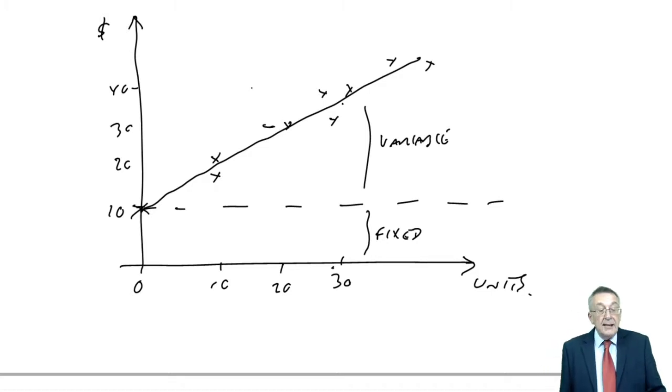But two things. One is, it's not completely variable. If it was completely variable, then since month two we spent four times as much as month one, the cost would be four times as much, and it isn't. So it's not completely variable. It's going to be part fixed, part variable, a bit like that graph I was looking at.